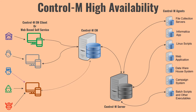Now let's talk about what happens when a request goes from Control M EM client to Control M Enterprise Manager and the EM goes down. In that case, communication between Control M EM and Control M Server will not happen, and users will get an error saying Control M is not available or gateway services are not available. All users will not be able to define, create, monitor, or manage any jobs — so Control M EM going down is a single point of failure.